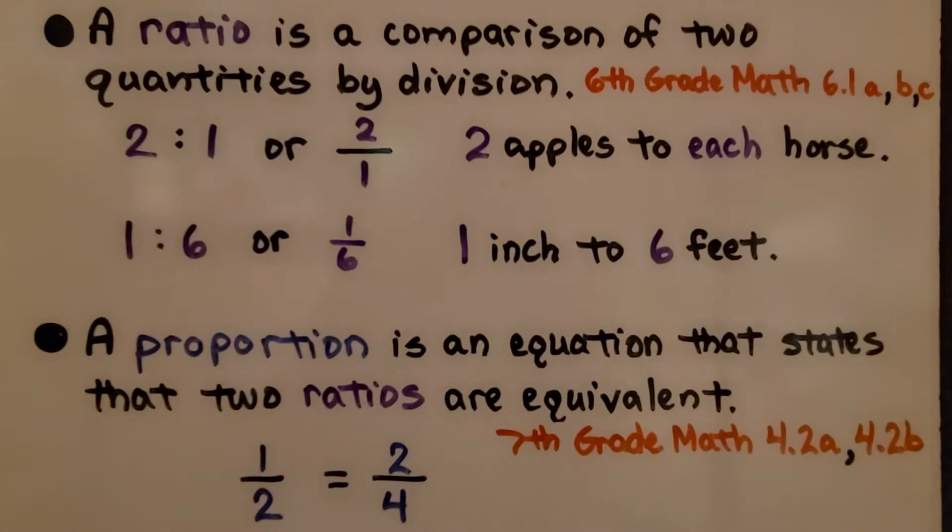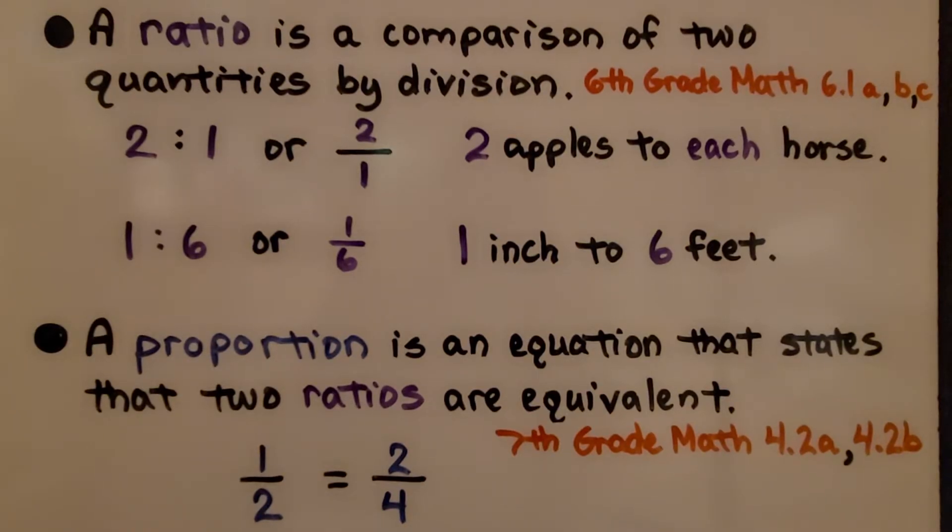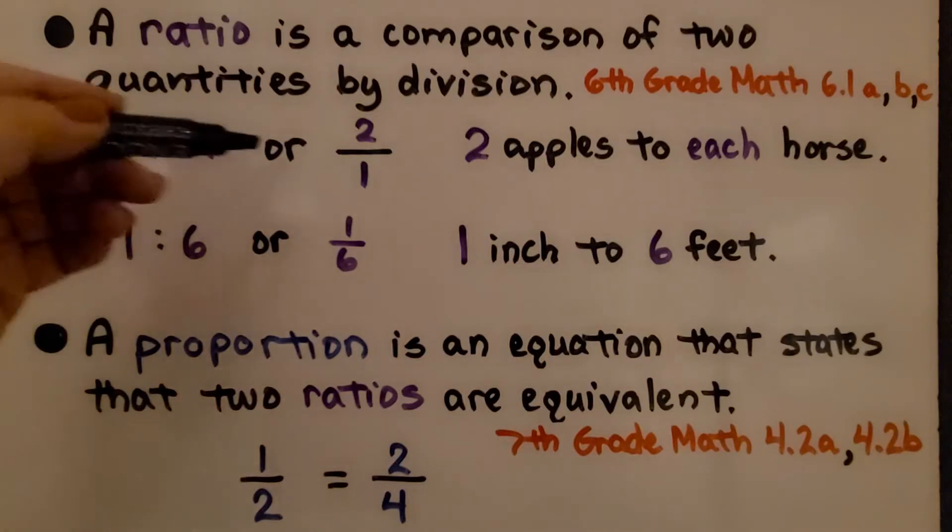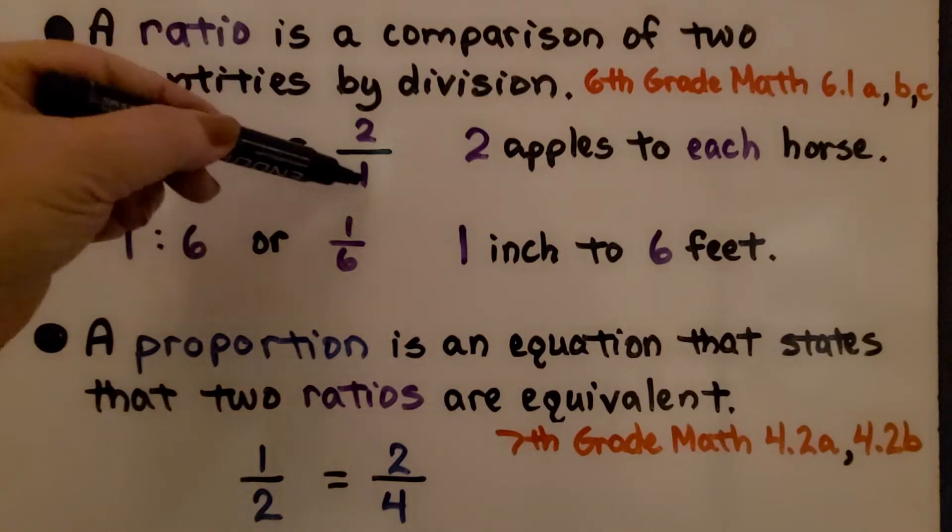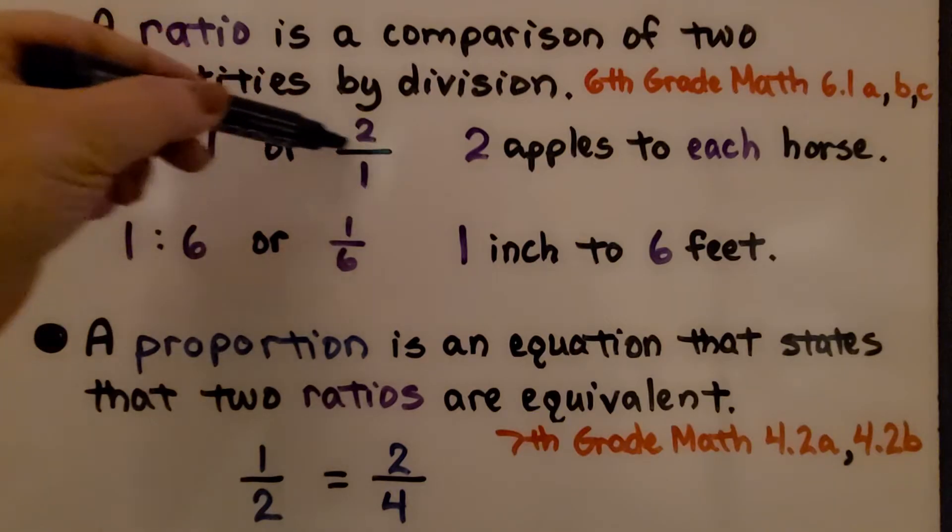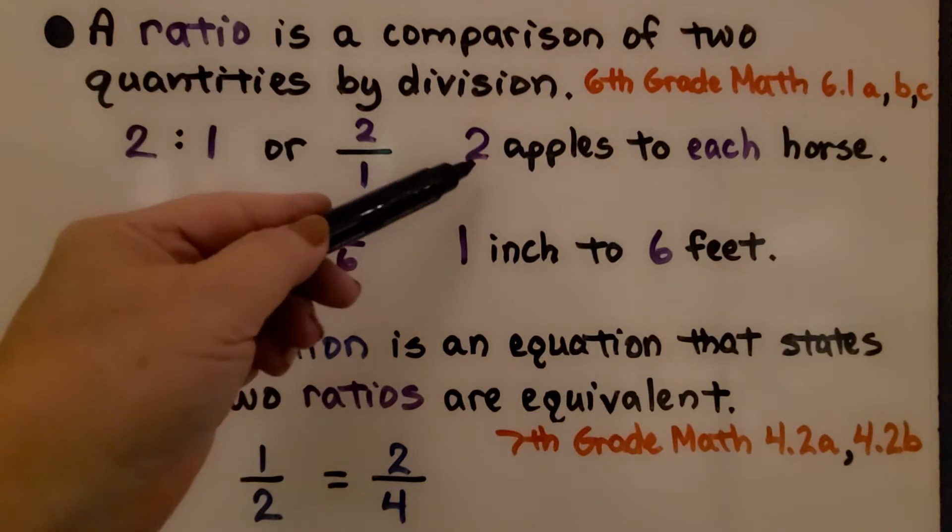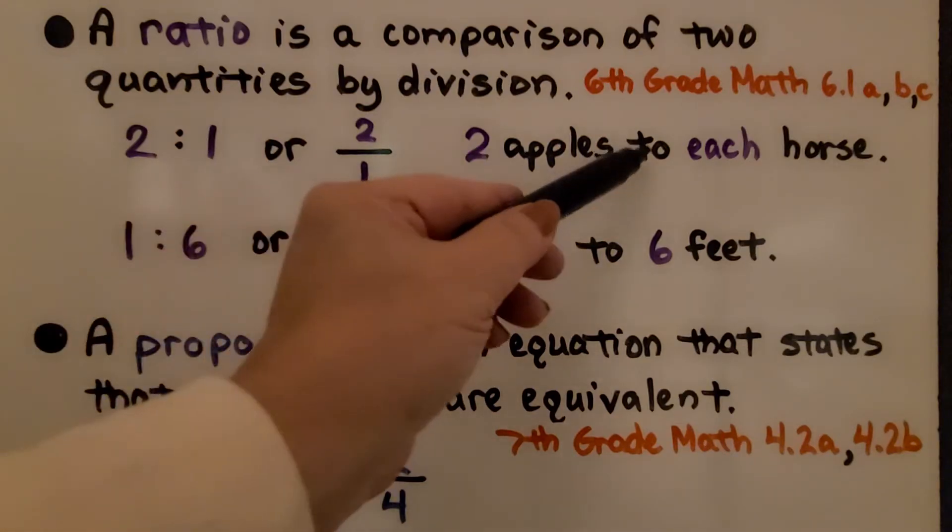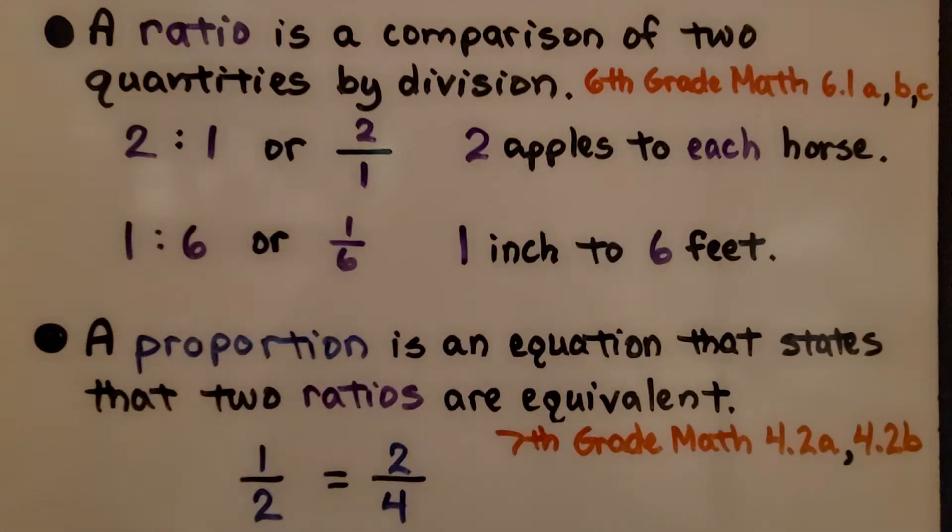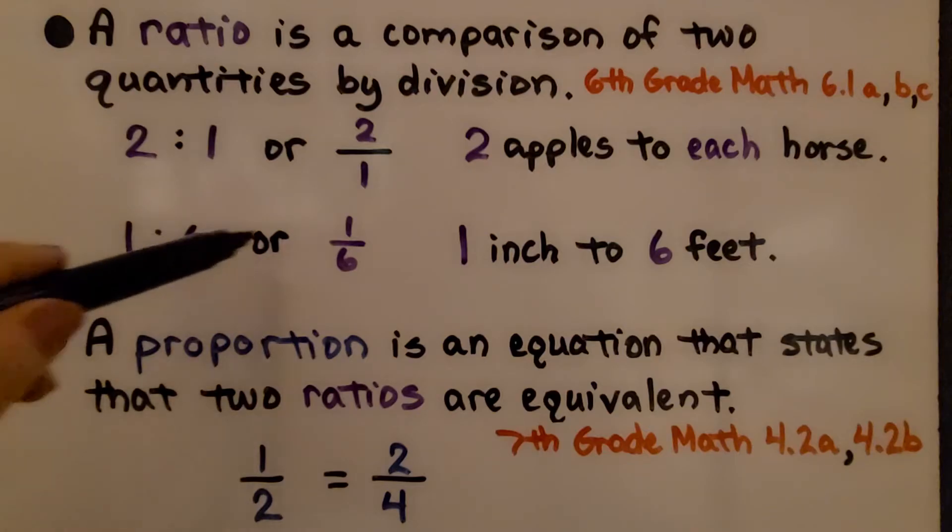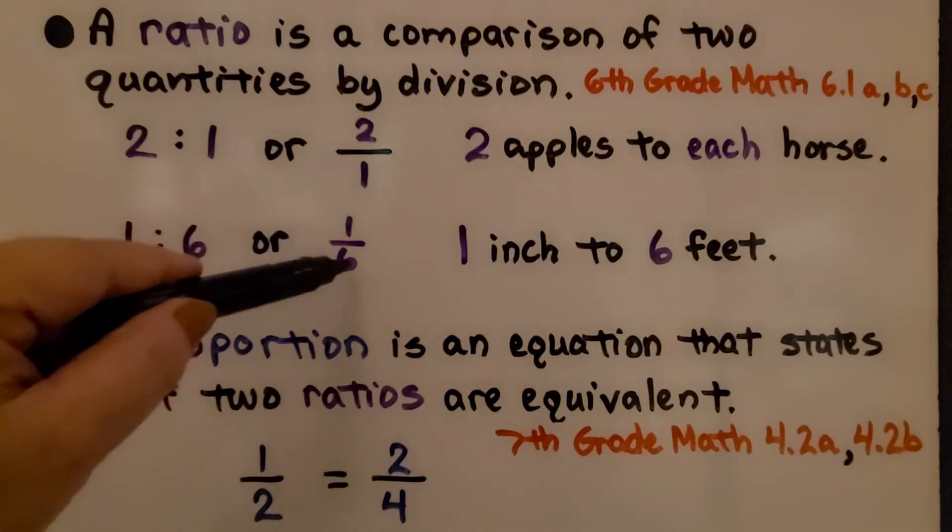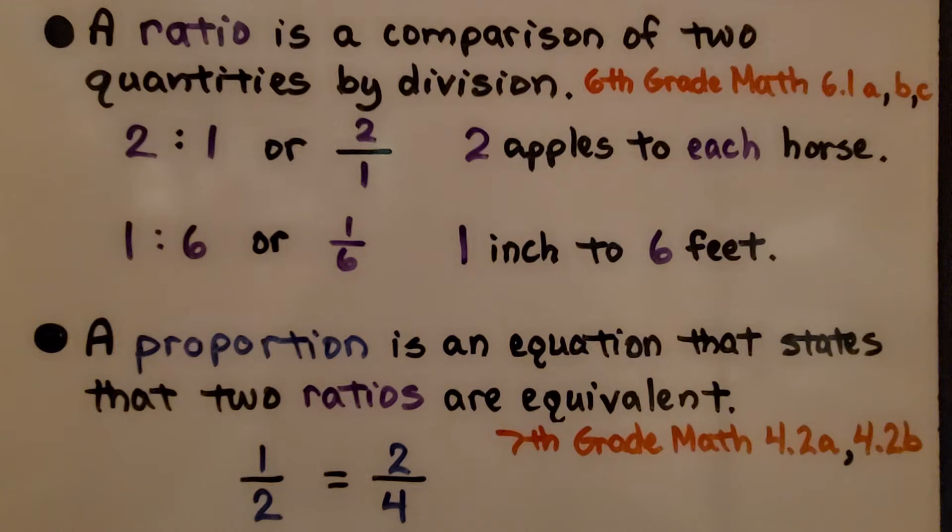Back in 6th grade math, Chapter 6, we learned a ratio is a comparison of two quantities by division. Here we have 2 to 1, or we could write it with the fraction bar as 2 over 1. It would be like giving 2 apples to each horse. We could write 1 to 6, that would be 1 inch to 6 feet.